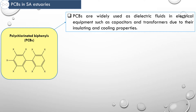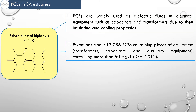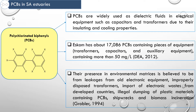PCBs in South African Estuaries. PCBs are made up of two fused benzene rings with chlorine atoms at the ortho, meta and para positions. PCBs are widely used as dielectric fluids in electrical equipment such as capacitors and transformers due to their insulating and cooling properties. According to a report published by the Department of Environmental Affairs in 2012, Eskom has about 17,086 PCB-containing pieces of equipment. Their presence in environmental matrices is believed to be from leakages from old electronic equipment, improperly disposed transformers, import of electronic waste from developed countries, illegal dumping of plastic materials containing PCBs, shipwrecks, and biomass incineration.